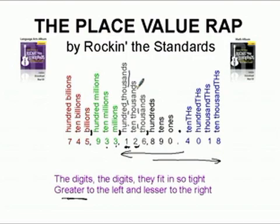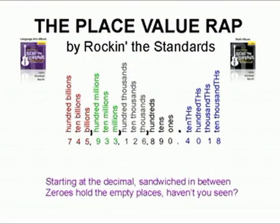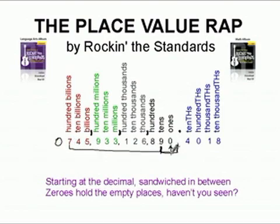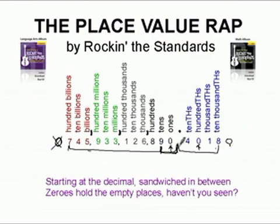Starting at the decimal, sandwiched in between, zeroes hold up empty places — haven't you seen? Here's our decimal point. If we start here and we have another digit like this nine, the zero is sandwiched in between the decimal point and a digit that's not a zero, and that zero has to be there. I cannot leave that empty. But if I put a zero out here, it's not sandwiched in between the decimal point and any other digit, so that zero does not need to be there. Same thing on the right side of the decimal point — a zero sandwiched between other digits and the decimal has to be there, but a zero on the far end is meaningless and does not need to be there.